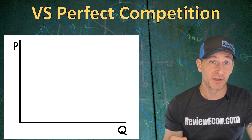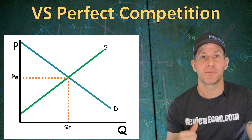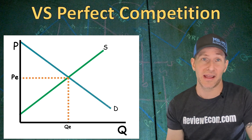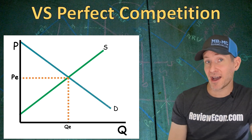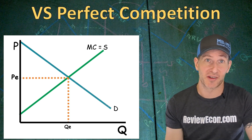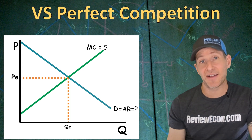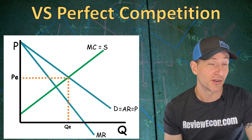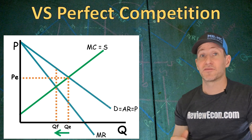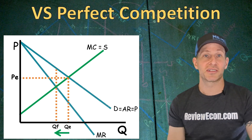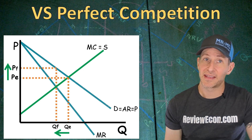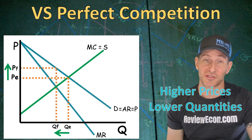Next we're going to compare a monopoly to a perfectly competitive market. Here we have a perfectly competitive market with a downward sloping demand curve, an upward sloping supply curve, and the competitive market quantity and price marked. If we want to turn this market into a monopoly, we remember that the supply curve is the marginal cost curve above the minimum of the average variable cost. With a monopoly, that demand curve is also the average revenue and price, with a marginal revenue curve below the demand. The monopoly produces where MR equals MC, and that is a lower quantity than we have with a perfectly competitive market. The price the monopoly charges is all the way up at the demand curve above. So a monopoly charges a higher price and produces a lower quantity than a perfectly competitive market.